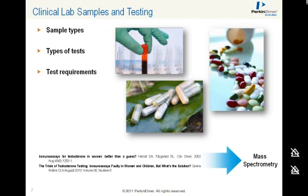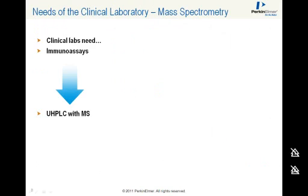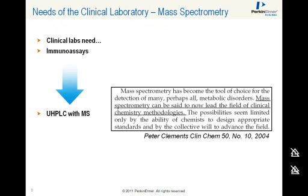Test requirements need to be robust, easy to use, accurate and precise. Multiplexing is advantageous — for example, analyte panels monitoring for diseases like CAH with cortisol, 17-OHP, and testosterone, as well as the ability to reach low analyte levels such as testosterone in women and children. Clinical labs also need fast turnaround time for analysis, ease of use, automation of sample prep and data analysis, minimum downtime and technical support, and most importantly, accurate results.